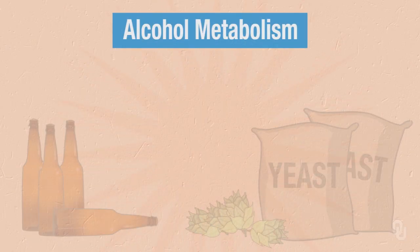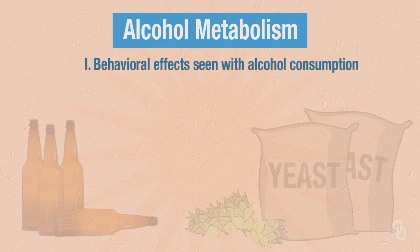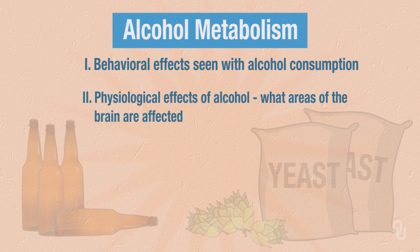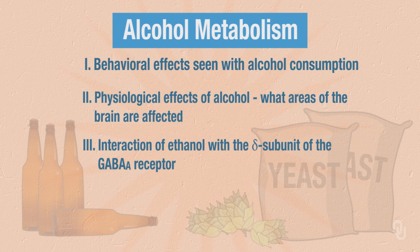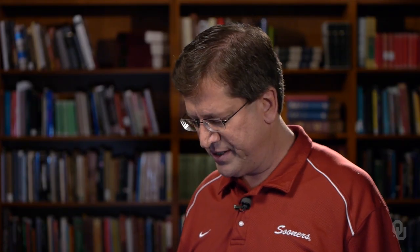To begin, we're going to first discuss some of the behavioral effects that are seen with alcohol consumption. Then we will discuss some of the physiological effects of alcohol and what areas of the brain are affected. Then we'll discuss the interaction of ethanol with the delta subunit of the GABA-A receptor, and we'll finish with a summary.